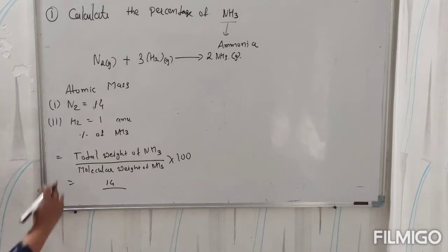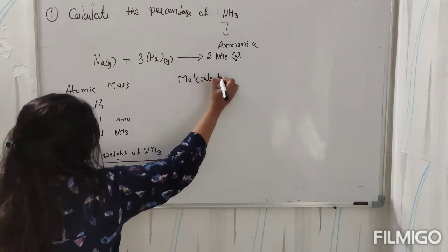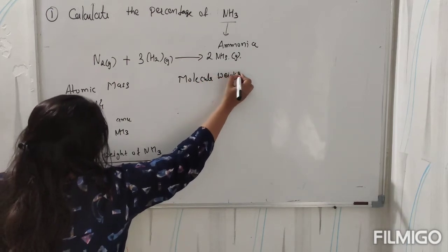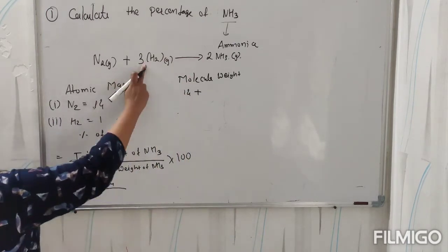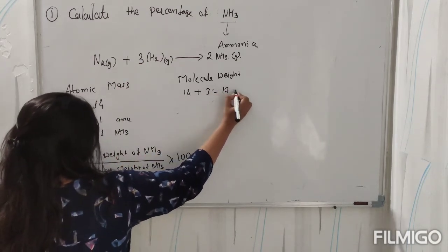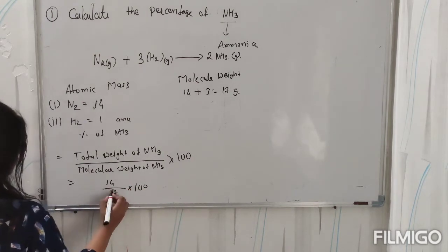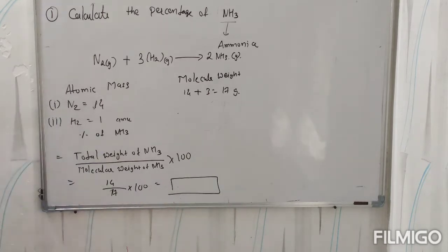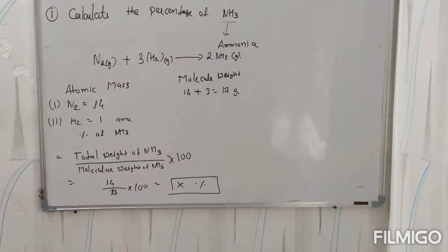Molecular mass of NH3: nitrogen is 14, plus hydrogen is 3 atoms, so 3 × 1 = 3. Total molecular mass = 17 grams. So the percentage = 14 upon 17 × 100. The calculation you will have to do yourself, and whatever answer you get — that percentage is the percentage of nitrogen in NH3.